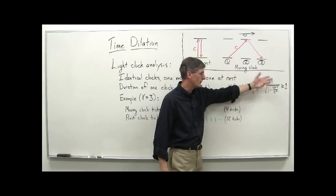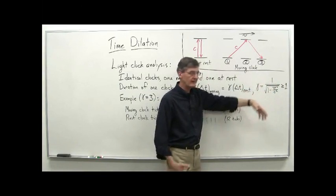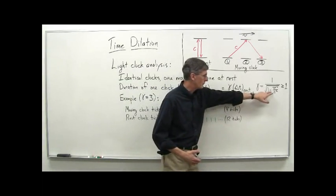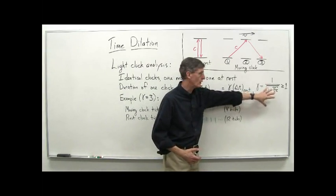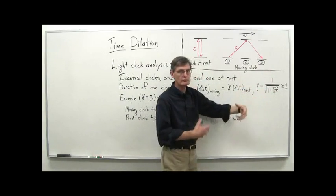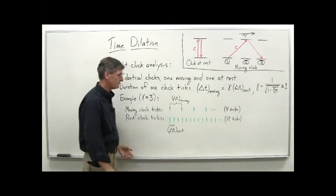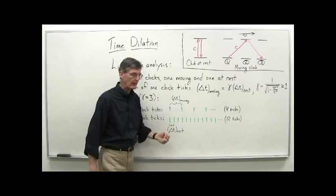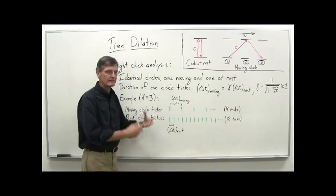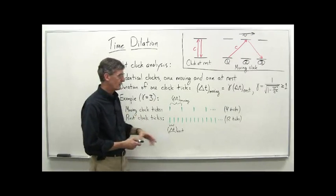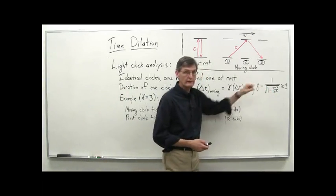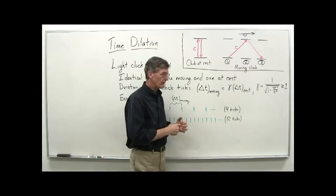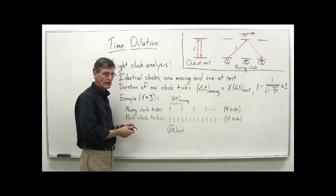Because gamma — which is 1 over the square root of (1 minus V²/C²) — is always greater than or equal to 1. If V is zero, we just get 1. But if V is any positive value, the quantity under the square root will be less than 1, so 1 divided by a number less than 1 gives us gamma greater than 1. In the next video clip, we'll explore some values of gamma further to get a feel for what values of V give what values of gamma.